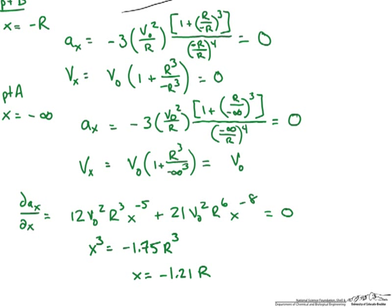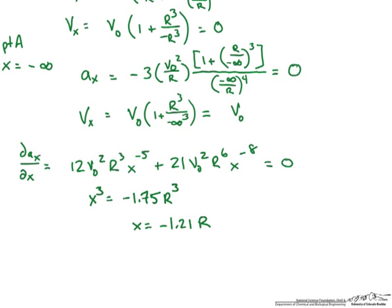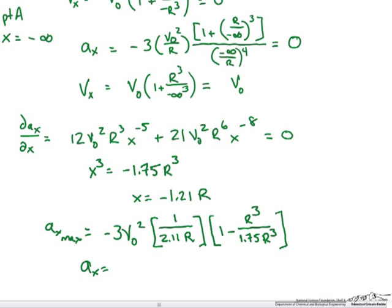So this does mean that the maximum deceleration of the airstream is a function of the radius of the sphere. And that distance where this occurs is also a function of the radius. So if we calculate what the maximum deceleration is based on this value, we see that ax max is equal to, and if we simplify this, I get that the maximum deceleration is negative 0.610 times the velocity squared over the radius.